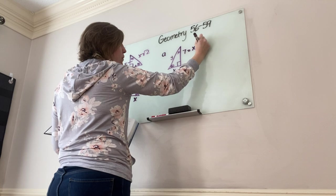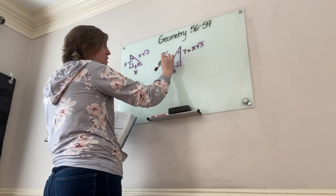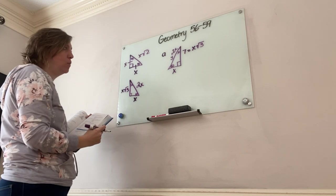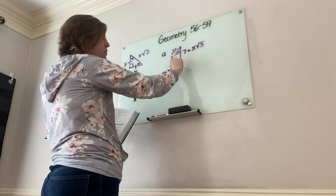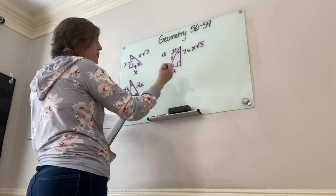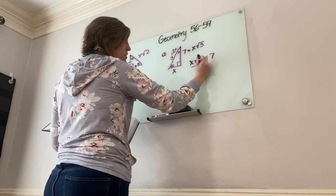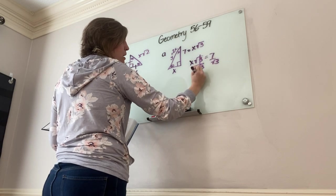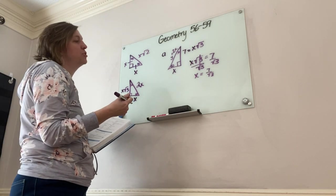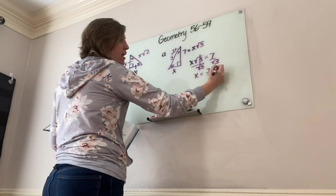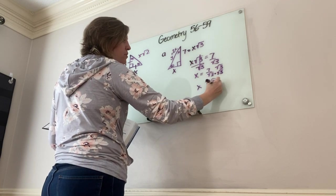Opposite 60 equals x√3, so x√3 = 7. I divide through by √3 to get x by itself: x = 7/√3. From algebra and geometry, I know I cannot leave a radical in the denominator, so I rationalize it: x = 7√3/3.